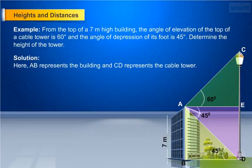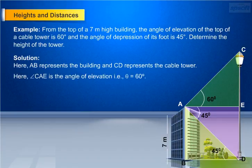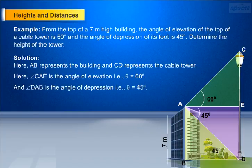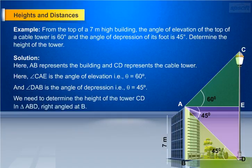Here, AB represents the building and CD represents the cable tower. The angle of elevation is theta equal to 60 degrees, and the angle of depression, angle DAB, is theta equal to 45 degrees. We need to determine the height of the tower CD.